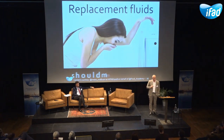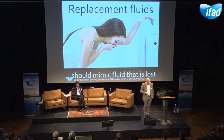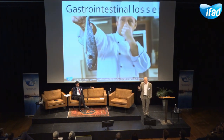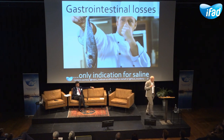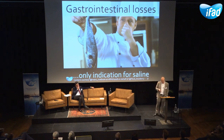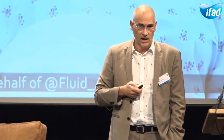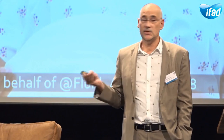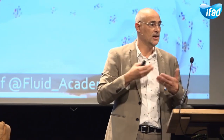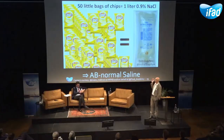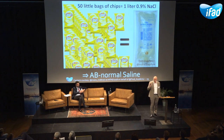Replacement fluids should mimic the fluid that is lost. And here comes maybe the only indication for normal saline, which can lead to hyperchloremic metabolic acidosis — so you could give it when there are gastrointestinal losses. The last indication for fluids is for nutrition: we have to provide fluid volume to give daily needs in calories. There are many slides on crisps and chips in relation to saline; this one is from Sean Buckshaw, who believes it's 50 little bags.